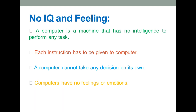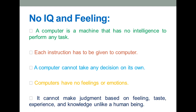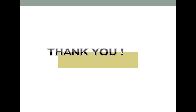The second disadvantage is no feelings. A computer doesn't have any feelings or emotions, so it cannot make judgments based on feelings, taste, experience, or knowledge, unlike a human being. That covers all the characteristics of a computer — please note them down in your notebook. Thank you everyone.